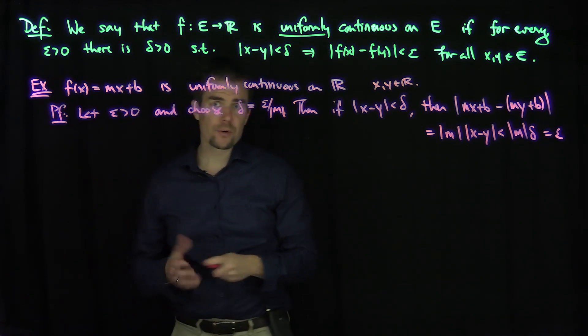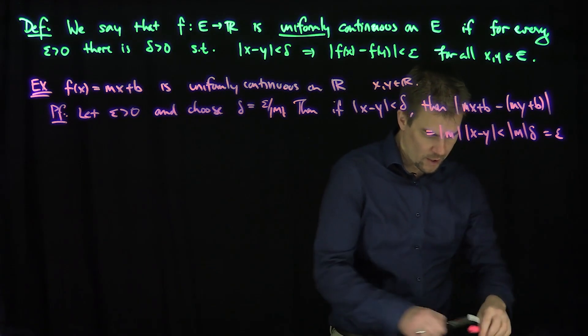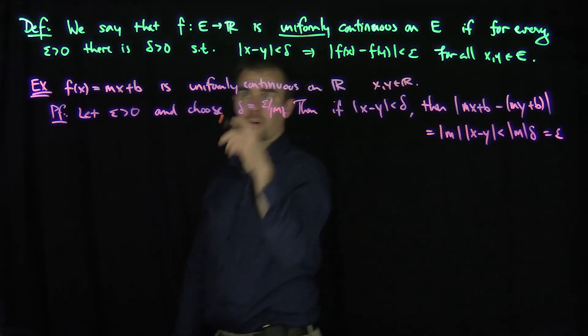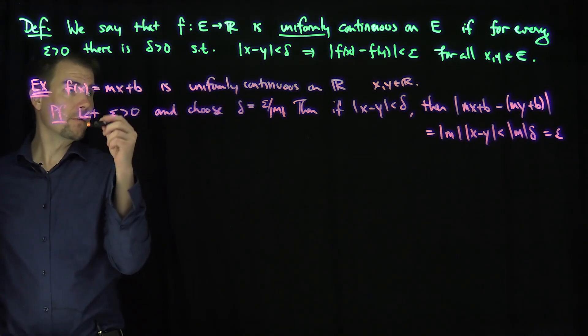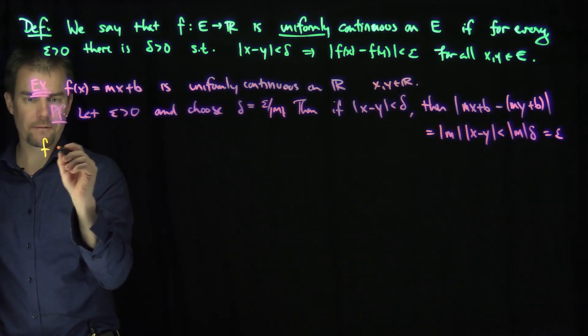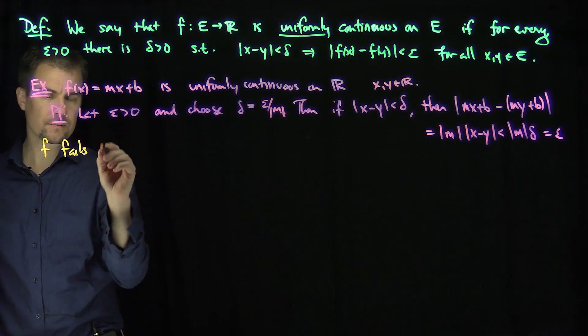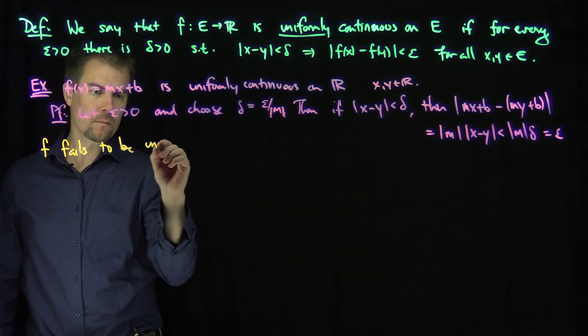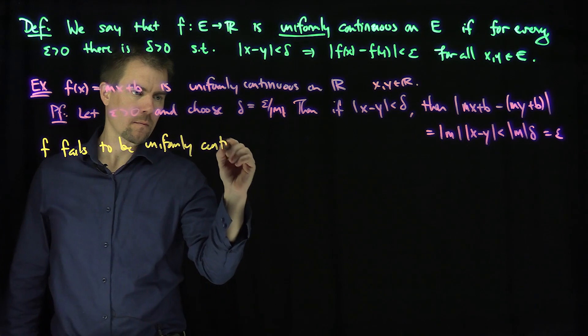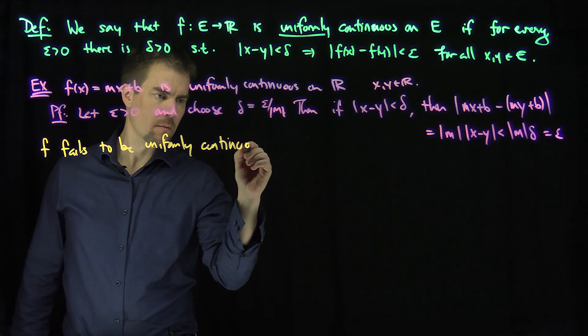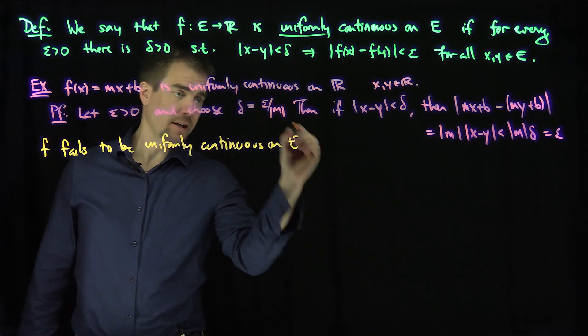Now, to find an example of a function which is not uniformly continuous, we need to do the following. So let me look at the logical negation of this statement. So f fails to be uniformly continuous on a set E